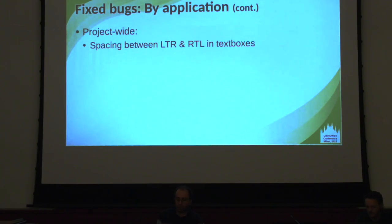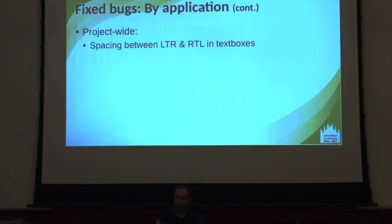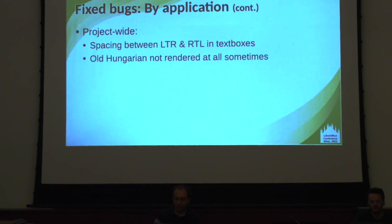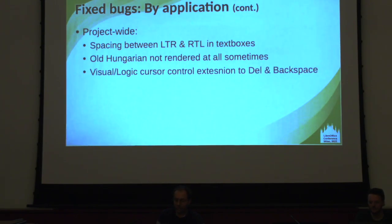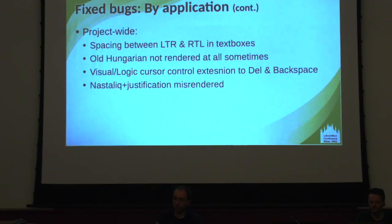Project-wide issues are a bit more interesting. We had some spacing issues when you have both left-to-right and right-to-left text within a text box. There was old Hungarian — a script used in Hungary, written right-to-left — which sometimes couldn't be used at all, and that was fixed. And there was a Nastaliq rendering issue — Nastaliq is a kind of Arabic font — so that just gives you an overview of what kinds of things were fixed.